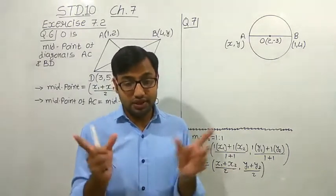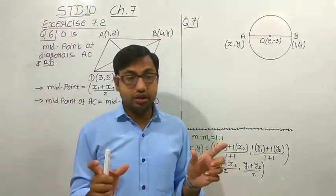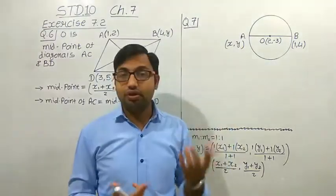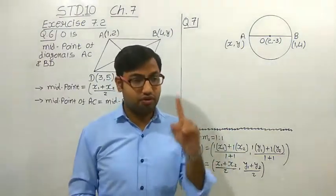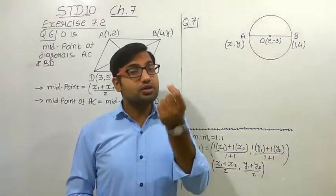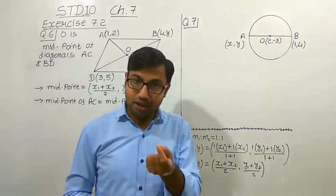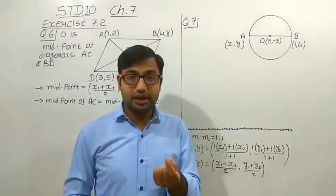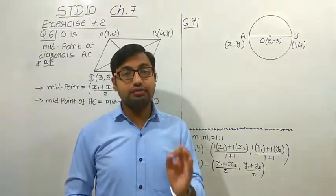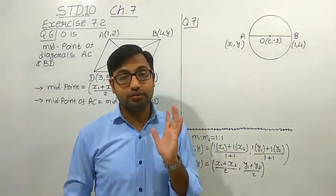Then the ratio M1 to M2 — both the lengths are equal. So when we divide it, we get 1. That means 1 is to 1. So whenever there is a midpoint of any line segment, it will divide it into two equal parts, and the ratio M1 to M2 will be 1 is to 1.